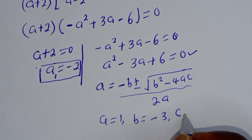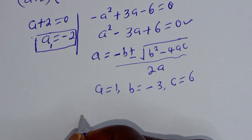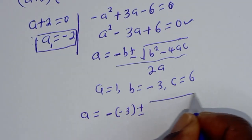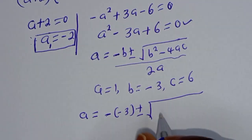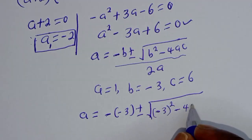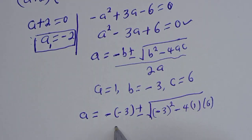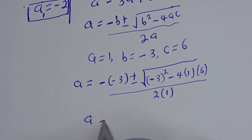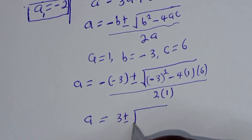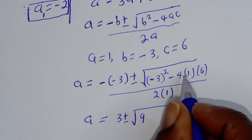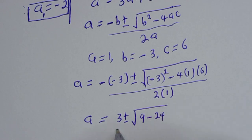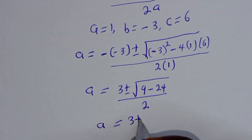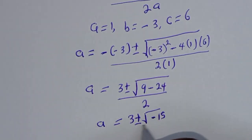The quadratic formula is a equals minus b plus or minus square root of b squared minus 4ac, over 2a. From our equation, a = 1, b = minus 3, c = 6. Substituting: a equals 3 plus or minus square root of 9 minus 24, all over 2, which gives 3 plus or minus square root of minus 15, over 2.